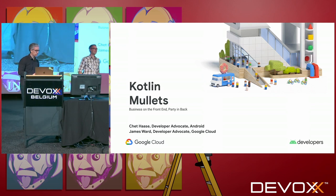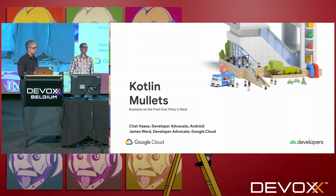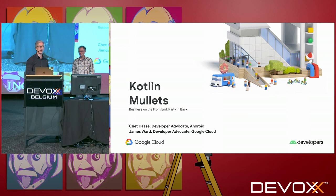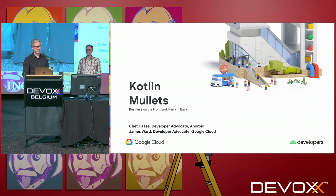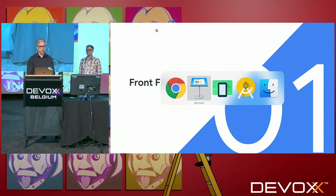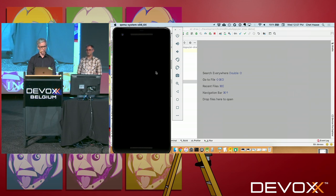I'm James Ward. I'm a developer advocate on Google Cloud. And I'm Chet Haas. The slide says I'm also a developer advocate, but on the Android team. So let's do this thing. Let's take a look at a quick demo. I'm going to pop out to the Android emulator and show you this.